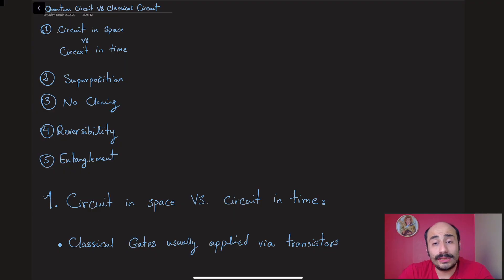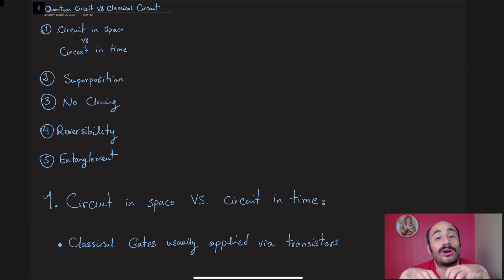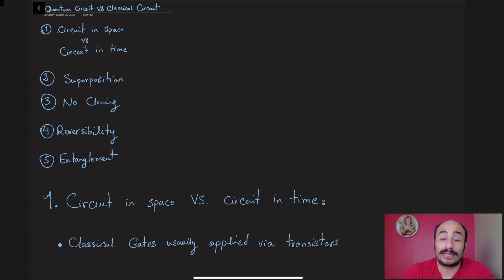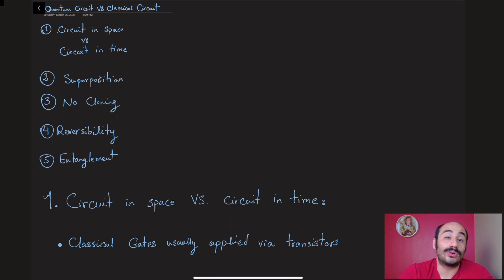Knowing this difference conceptually is important before starting to set up the circuit itself. When it comes to quantum circuits and classical circuits, there are five main differences. One of them is that classical circuits are in space and quantum circuits are in time — a concept we'll work through by talking about logic gates. Another difference is that in the quantum circuit you have superposition, and you also have the no-cloning law in quantum mechanics.